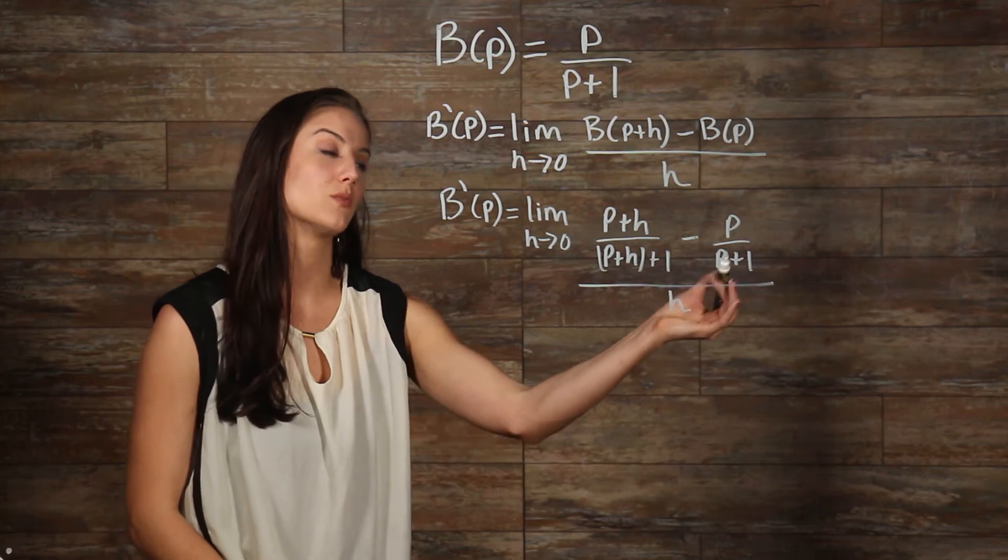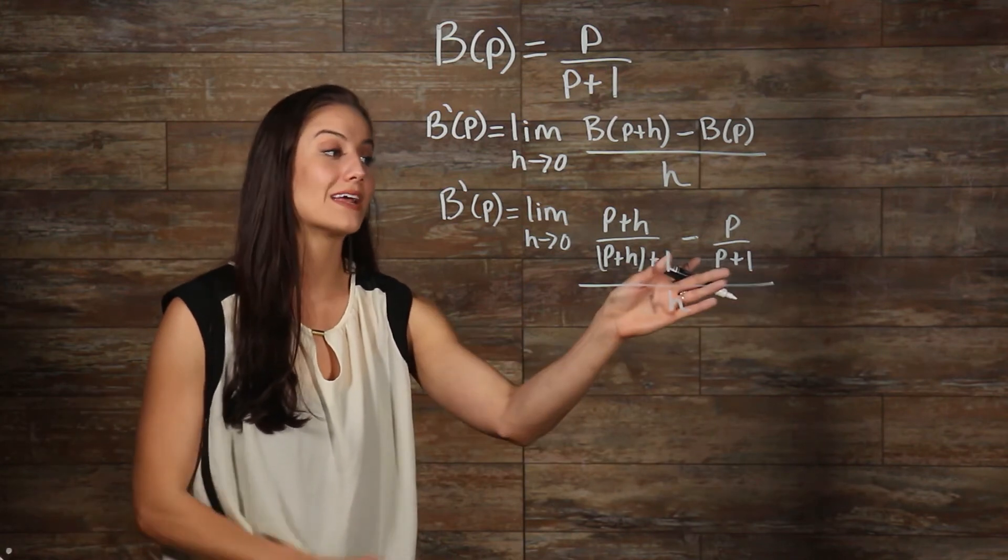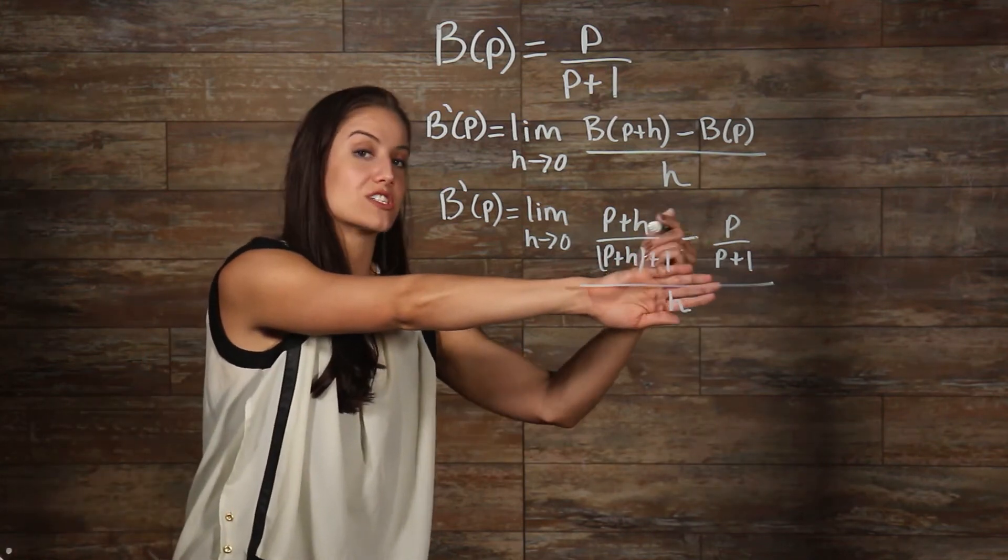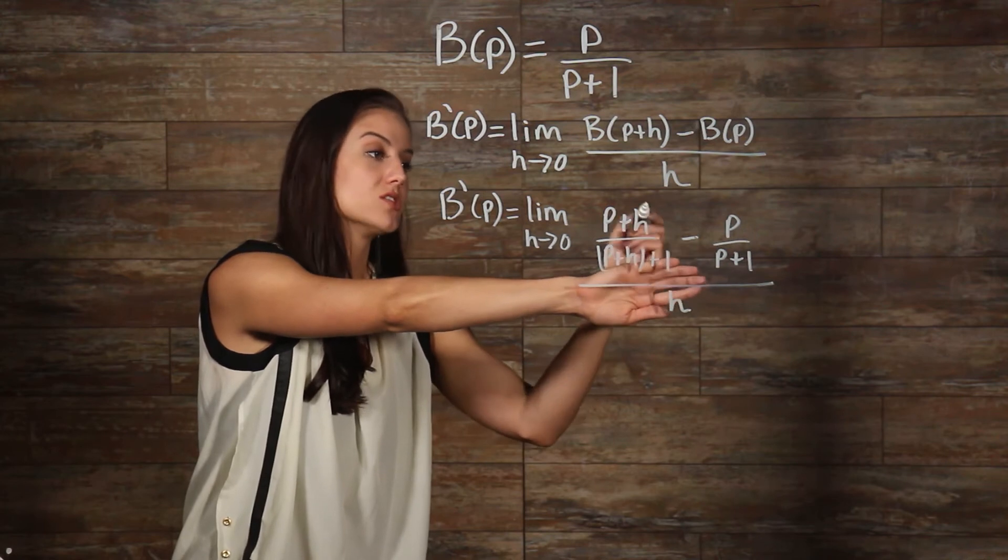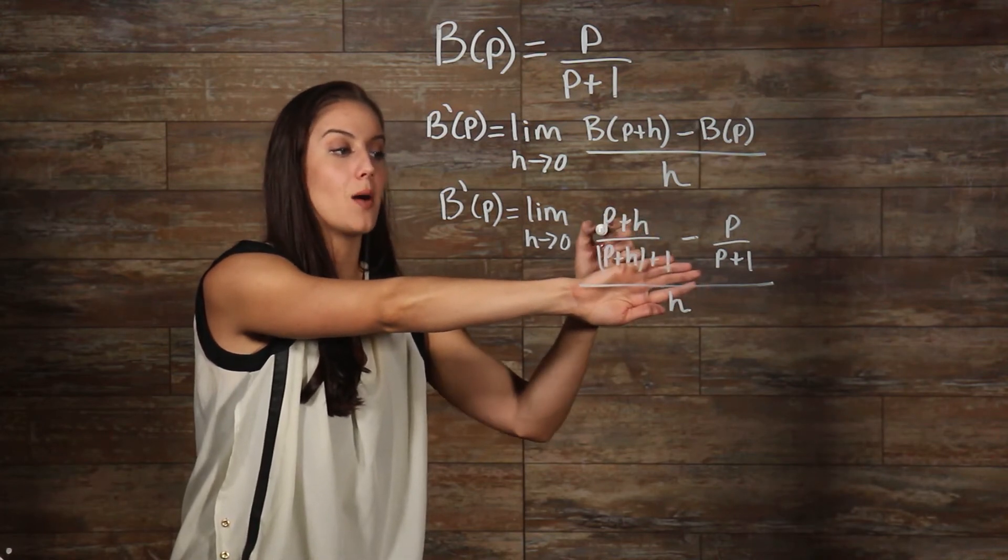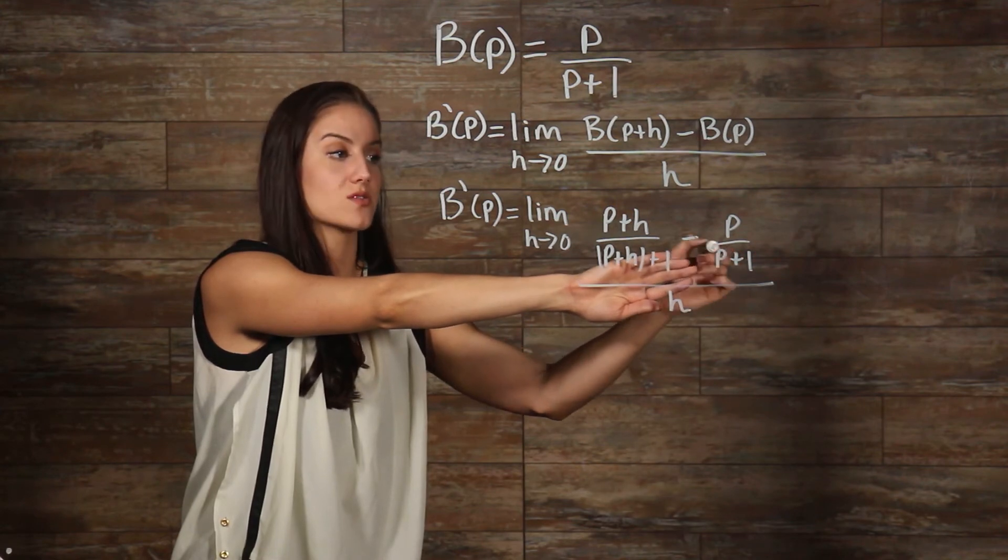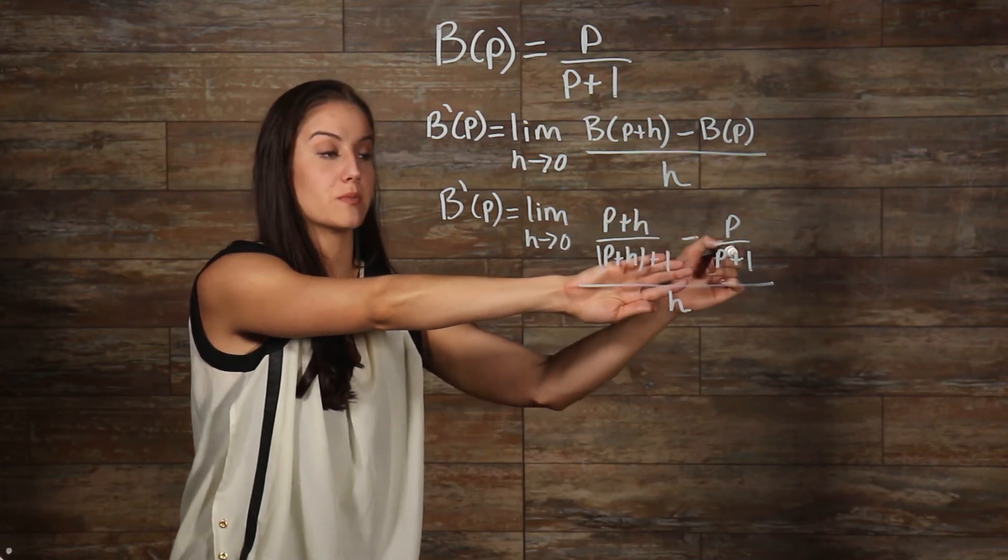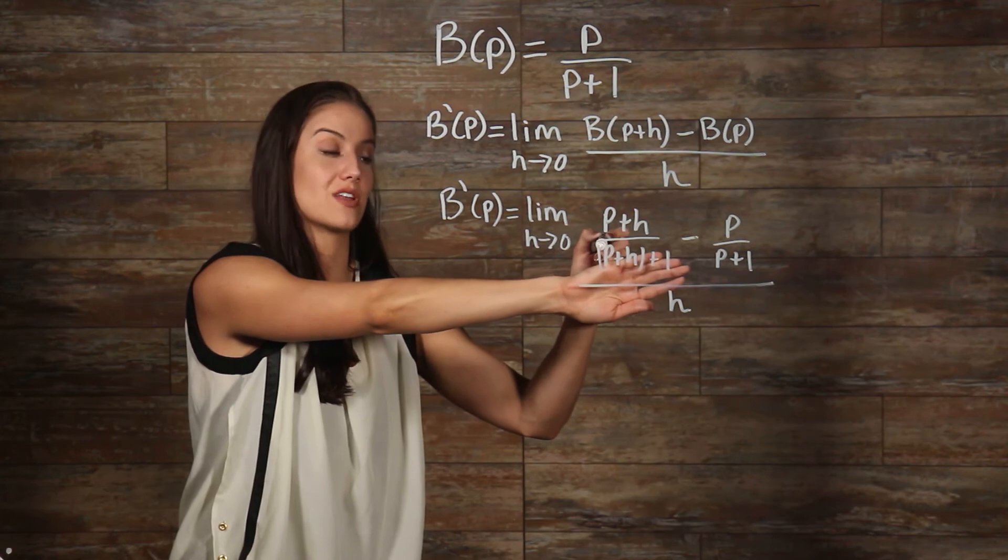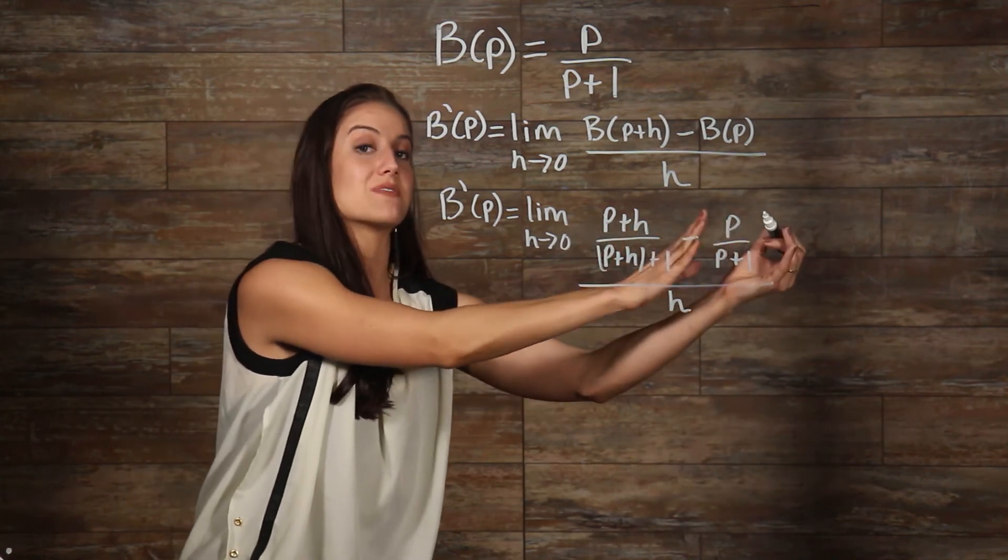We know that to get rid of this h, we're going to multiply times the reciprocal. And when adding or subtracting fractions here, we need to have the same denominator. To get that, we're going to multiply the top and the bottom times whatever is over in this denominator. That's going to be p plus h times p plus 1, and then we're going to do the same thing in the denominator. And we're going to do that same thing over here. Doing that is going to give us this.